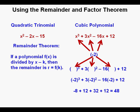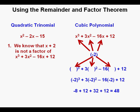So based on our use of the remainder theorem, we know two things. First we know that x plus 2 is not a factor of x cubed plus 3x squared minus 16x plus 12. We know that because the remainder is a number other than 0, in this case 48.